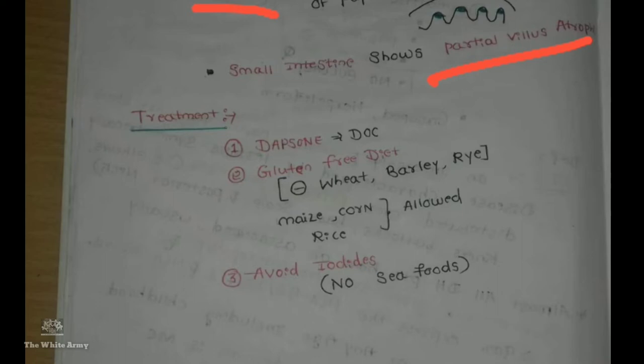The drug of choice is Dapsone along with a gluten-free diet. We should avoid wheat, barley, and rye, and also avoid iodides as it is associated with thyroiditis.